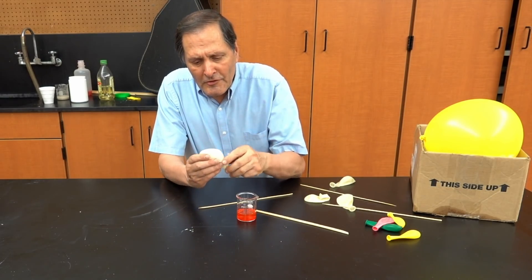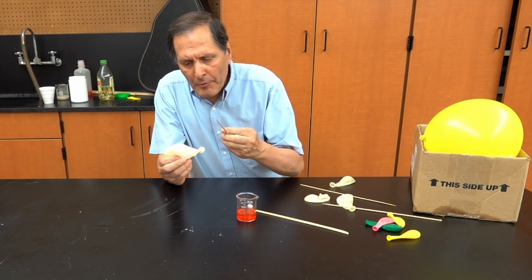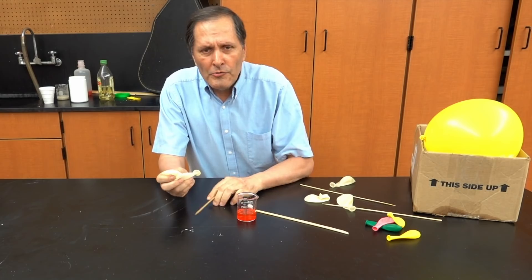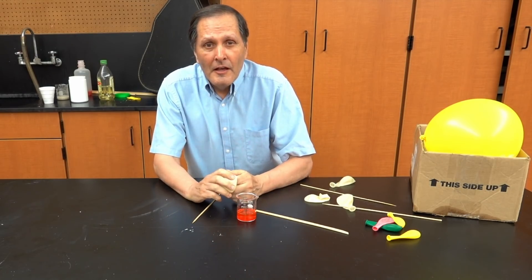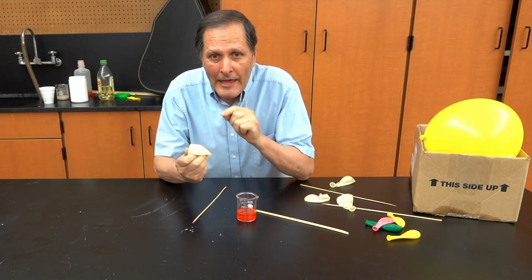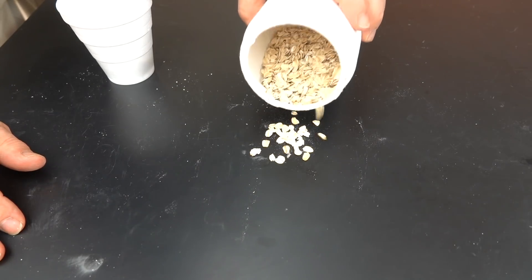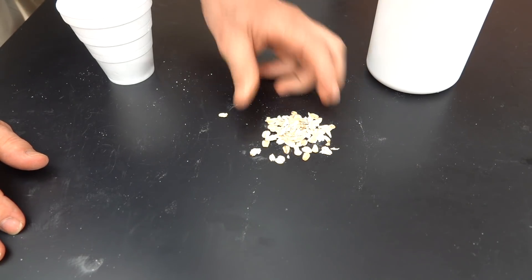Here's the problem when we do this experiment. Once we skewer that balloon, it's got two holes in it, and it's simply going to deflate. So the question is, is there some way we can delay that action? The answer lies with a breakfast cereal, oatmeal.